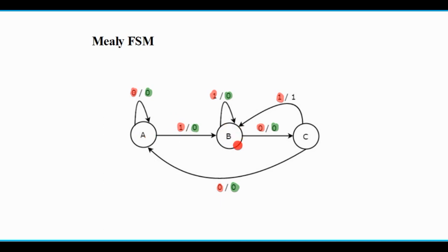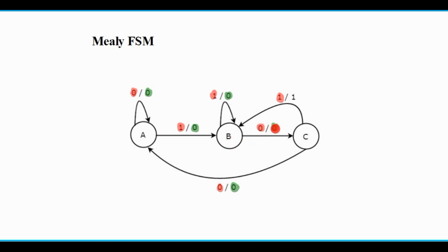If the current state is B and the input is 1, then the output is 0 and there is no transition — it will remain in its own state. If the current state is B and the input is 0, then the output will be 0 and there is a transition from state B to state C. So the output is determined by both the current state and present input: if present state is B and input is 1, output is 0; if present state is B and input is 0, output is 0 and there is a transition to C.